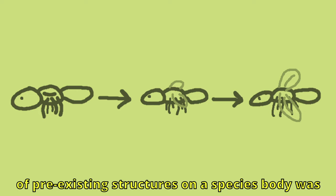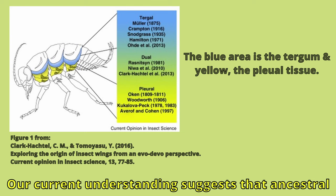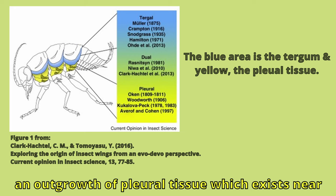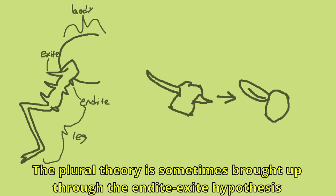Now onto how insect wings formed. The general understanding now is that over generations, a group of pre-existing structures on a species' body was modified to form wings. However, theories on what part of the body this was do vary. Our current understanding suggests that ancestral wings formed from either the thoracic tergum — the covering of the thorax, also known as the middle segment — an outgrowth of pleural tissue which exists near the insect's legs, or both.